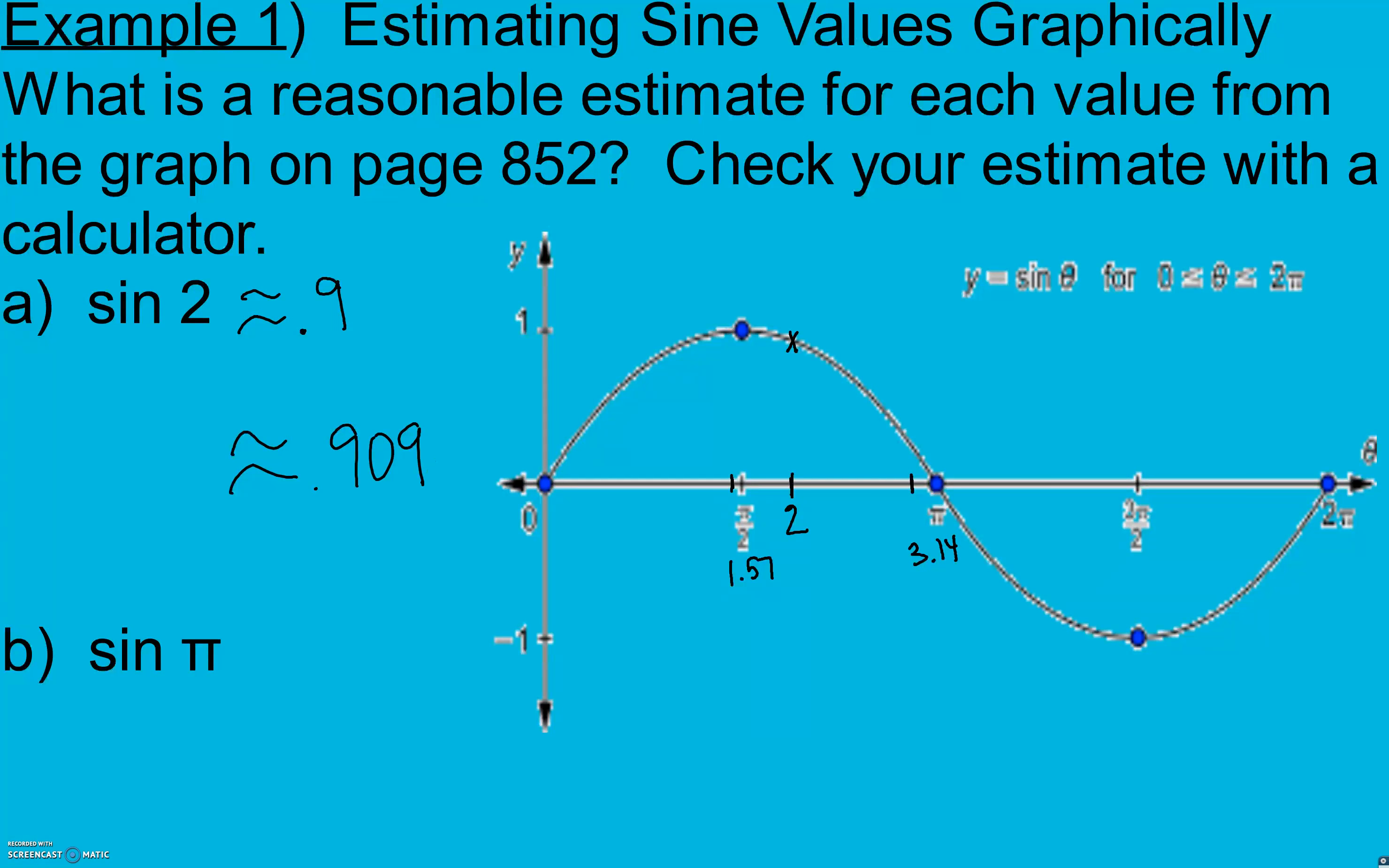Now for part B, we're looking for pi. And pi is an exact value here. Pi is right here. So our value of sine at pi is 0. We're going to take sine pi and it gives us 0. And we don't have to change it to radians every time.